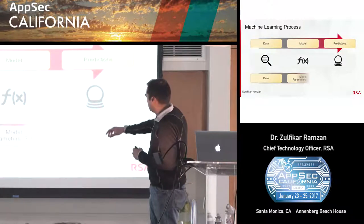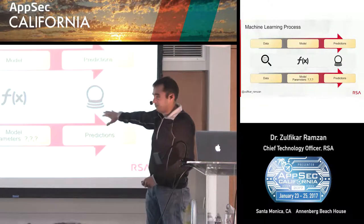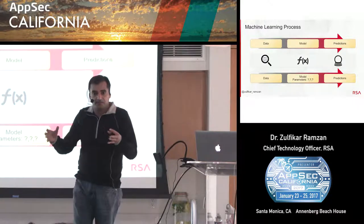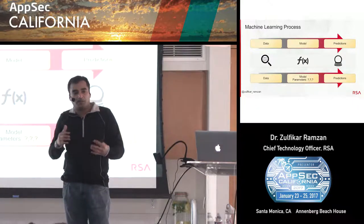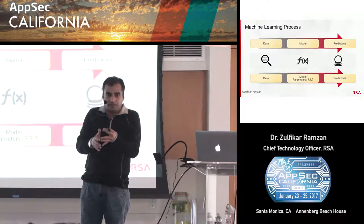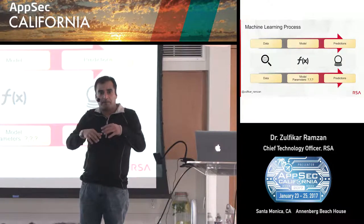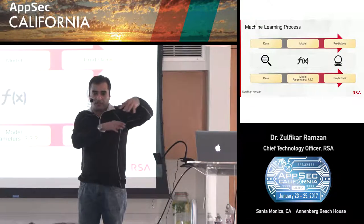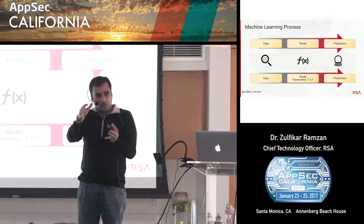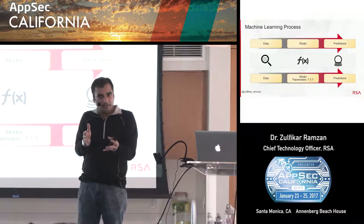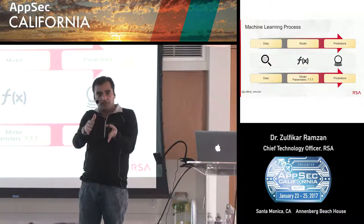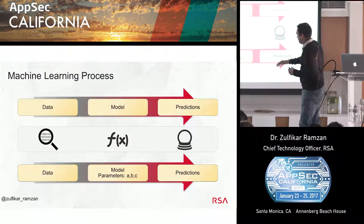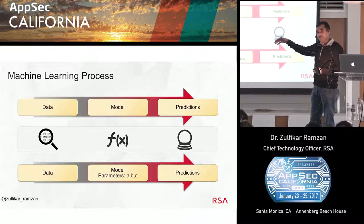In practice, the model typically has a set of parameters — think of it as a set of equations with unknowns. The goal with the machine learning algorithm is to figure out the values for those unknowns that optimize the behavior of that model with respect to the data you started with, with the hope that if you do it correctly, you'll be able to apply that model to new instances. It becomes an optimization problem.